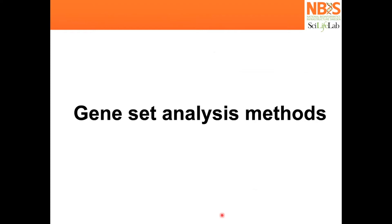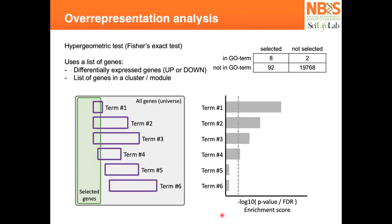To do this analysis, there are usually two broad categories of methods. The first one is called overrepresentation analysis, also known as a hypergeometric test. In that test, you basically use a contingency table like this one, and you perform either a chi-squared or a Fischer test.